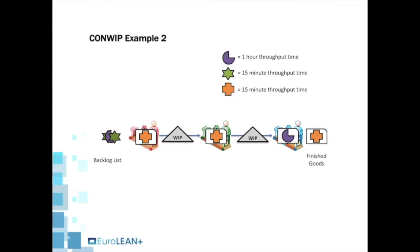Imagine the throughput time for purple products is one hour, whereas the throughput time for the other two products is just 15 minutes. If the orange product isn't actually demanded by the customer at this point in time, it will move into finished goods. This releases the CONWIP card for the next product in the backlog list.